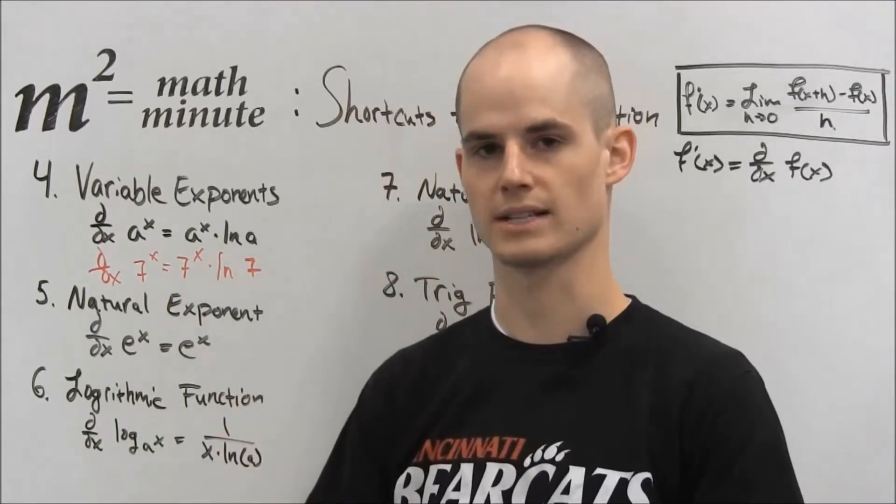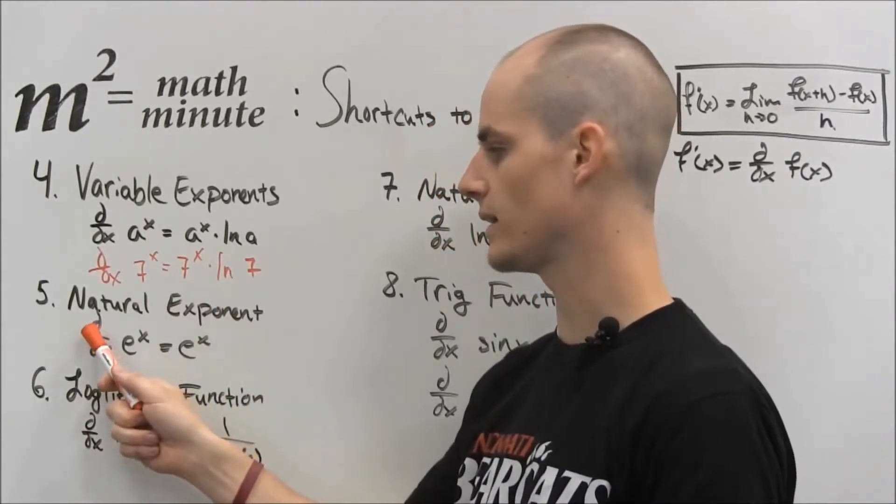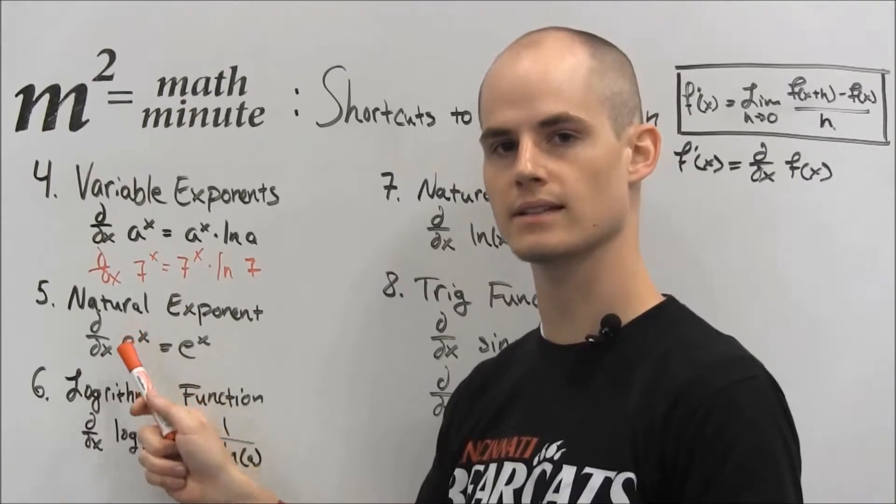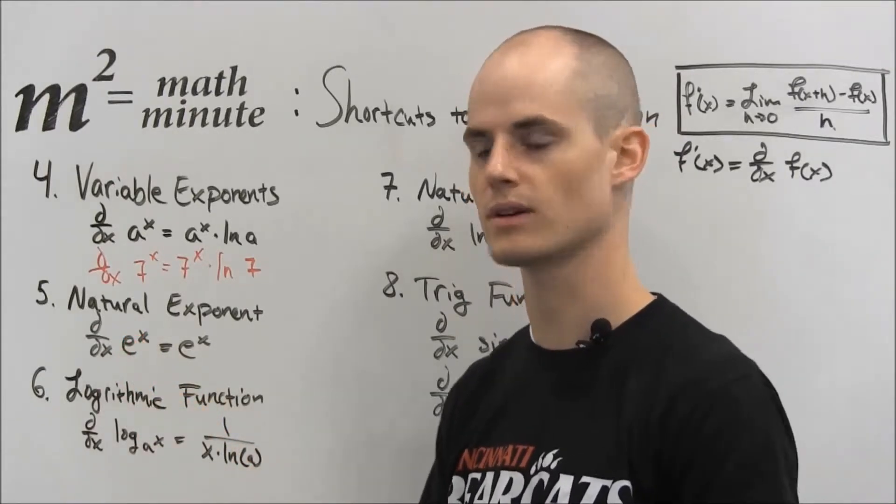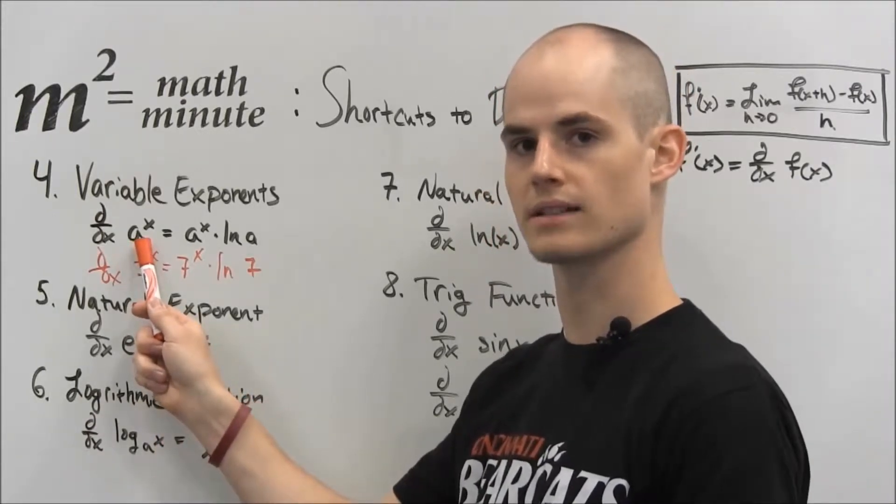So this next one is natural exponent. This is kind of similar to this one. What it says is that if we have the derivative of e to the x, which e is that constant, that financial number, equals e to the x.